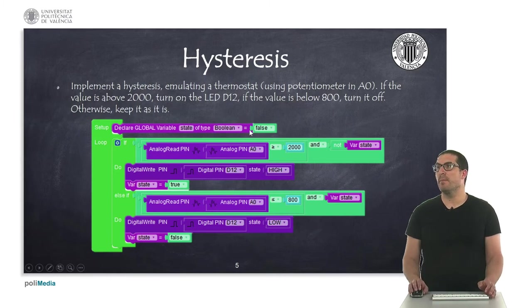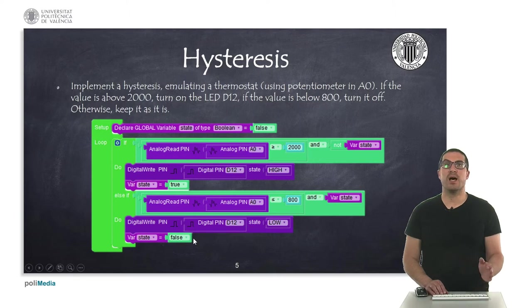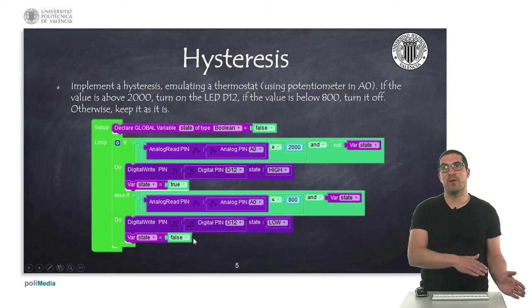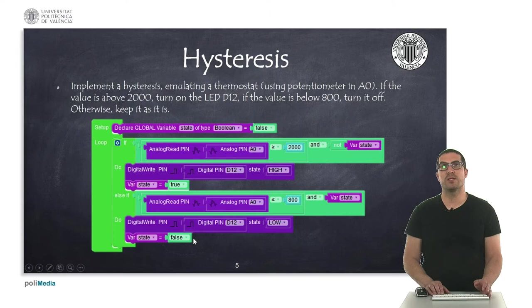And then, else if, if the value that I read on the potentiometer is below 800 and the state is true, then I will set the value to low, the pin of the LED to low, and then set the state to false. Otherwise, the state won't be changed and the LED won't change too. So, whenever we're in the middle between 800 and 2000, then it depends if we come from low values or from higher values. And that's the hysteresis effect.